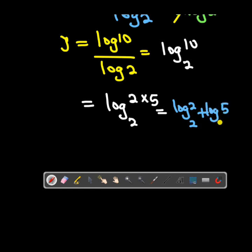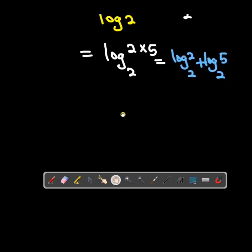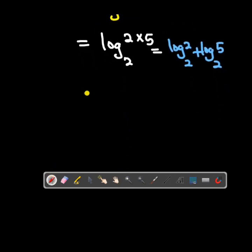And you are done. You can clearly see that log of a number to the same base is 1, plus the other one you cannot simplify, so you can just leave it as log 5 base 2.